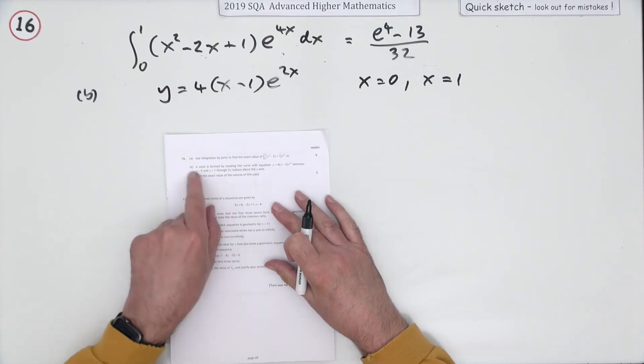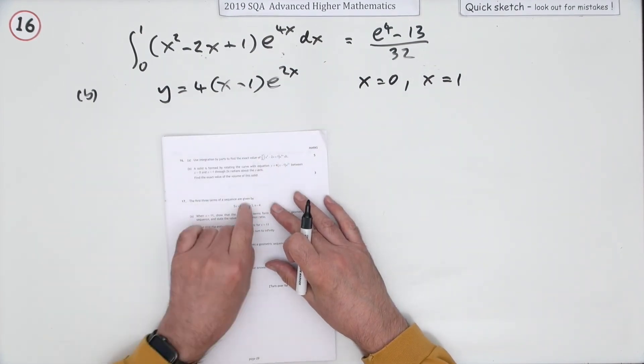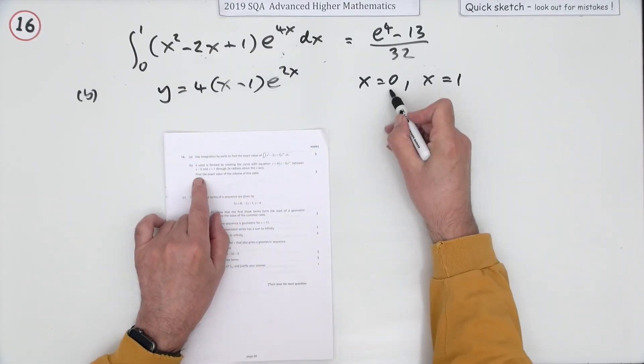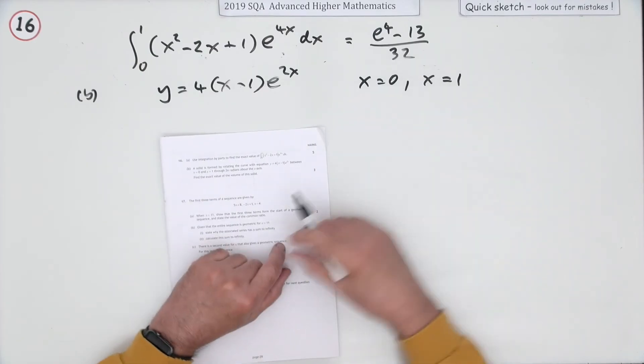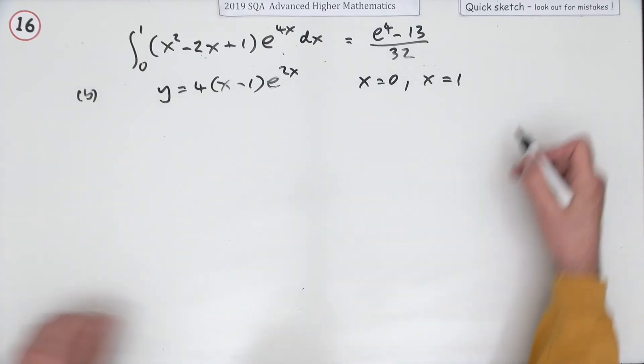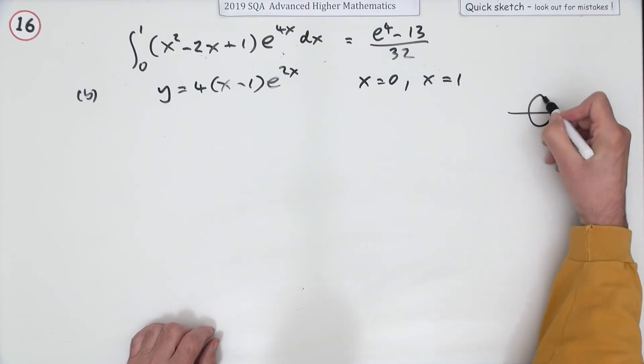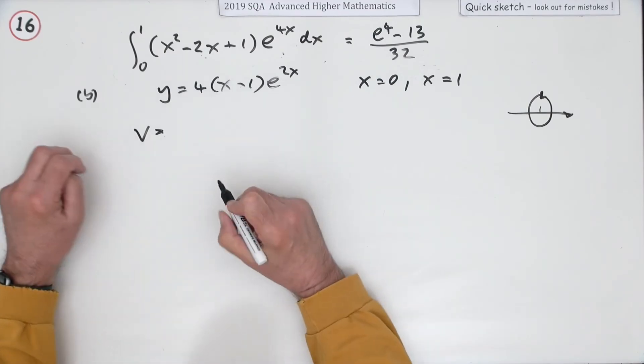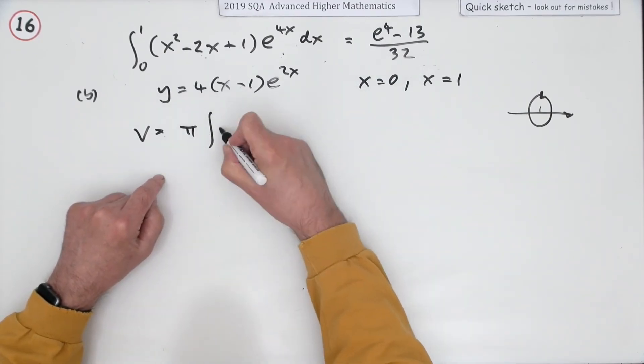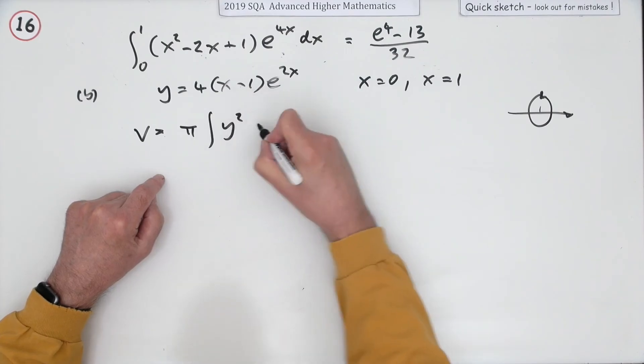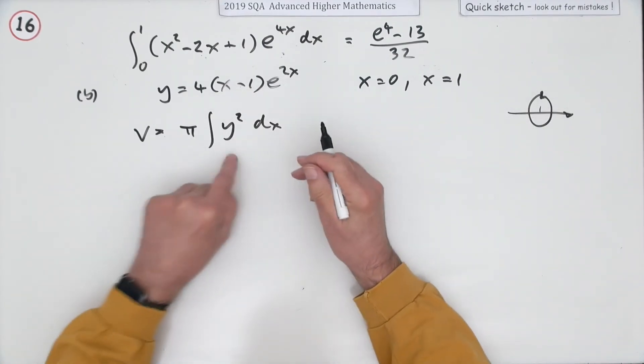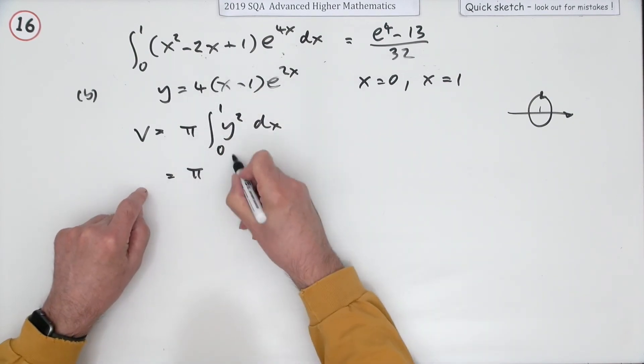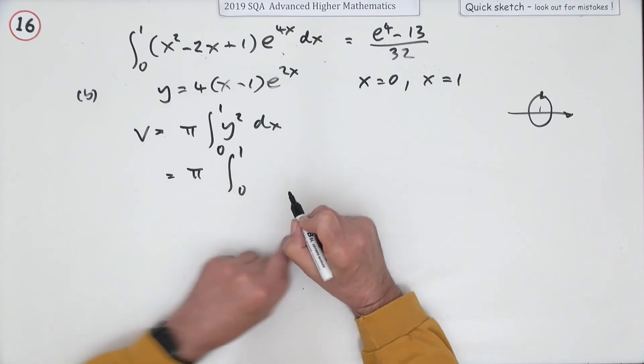Now part B: a solid is formed by rotating the curve with this equation about the x-axis between x equals 0 and x equals 1. What's the exact volume of this solid? So you're rotating it about the x-axis, that means the radius is the y coordinate. So the volume will be pi r squared h, pi, and r is y, so, and h will be the little bit of x. Pi y squared dx from 0 to 1.